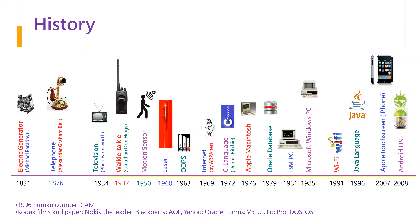I created a timeline of technology starting from 1831 until 2008, showing different technologies developed over time. These technologies are important even today — for example, the electric generator invented by Michael Faraday in 1831. All the technologies we talk about today require electricity; without electricity, nothing works. Telephone, television, walkie-talkie — all these technologies will be used in future technologies.